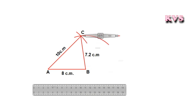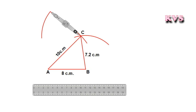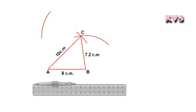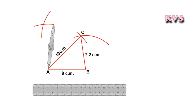Using a compass, again draw an arc from C with a length of 8.4 cm. Now draw an arc from A with a length of 9.6 cm. The intersect point of these two arcs, note down as D.